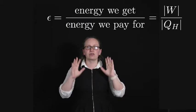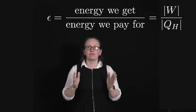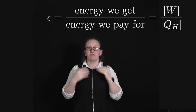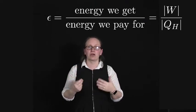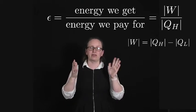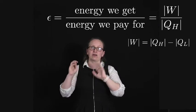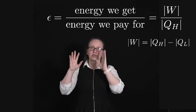Okay, but let's now use this equation to calculate the efficiency of the Carnot cycle. So for the Carnot cycle, we showed that the absolute value of the work was equal to the absolute value of the heat added, QH, minus the absolute value of the heat lost, which was QL.